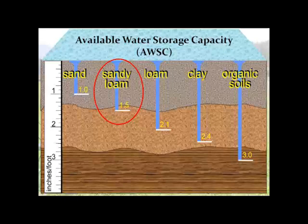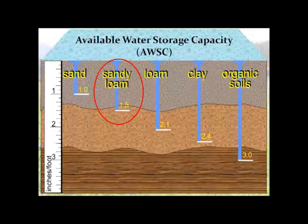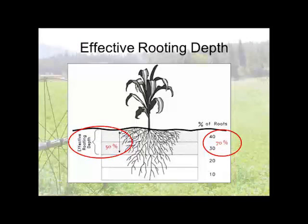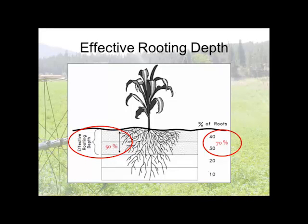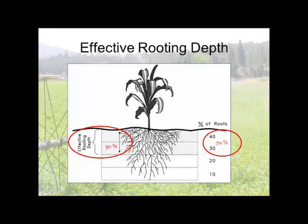We're going to use sandy loam as an example — it stores one and a half inches of water per foot. To know how much water we can store for our particular crop, we need to know how deep the crop roots go into the root zone, because that tells us how big our gas tank is. Most water is taken up in the first half of the root zone, but there's a significant amount taken from the bottom half as well. We need to know the effective root depth of various crops.